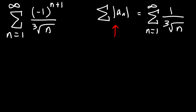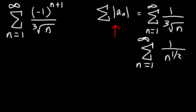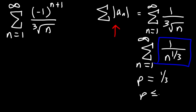Is this series convergent or divergent? We can rewrite the cube root of n as n^(1/3), so notice once again we have a p-series. This time p = 1/3. Because p is less than or equal to 1, the absolute value of the series diverges.